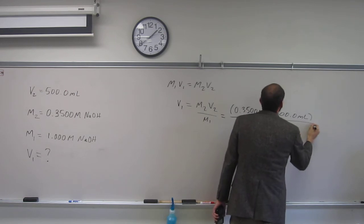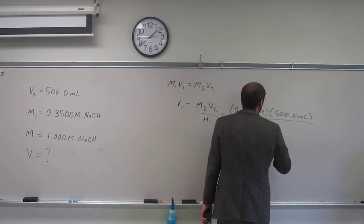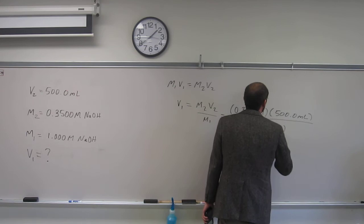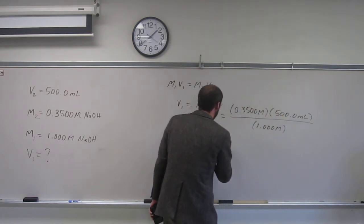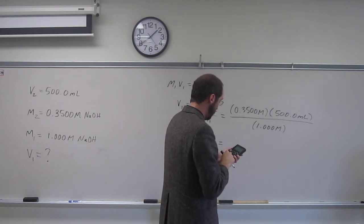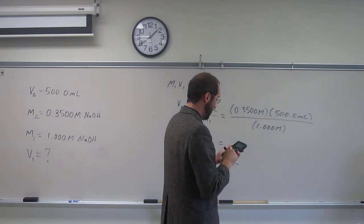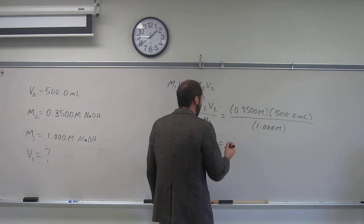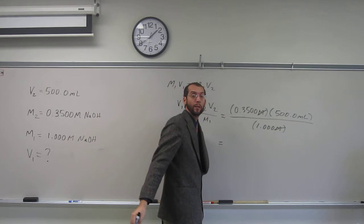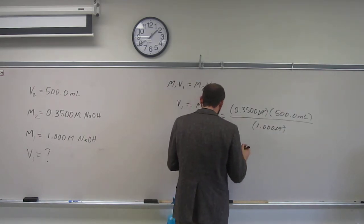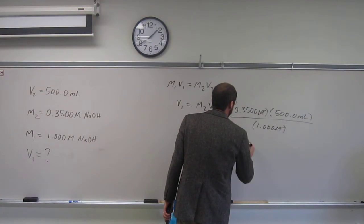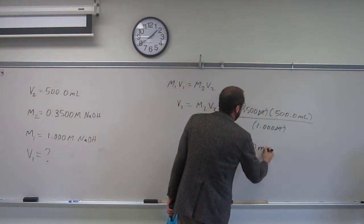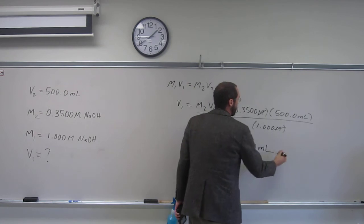divided by 1.0 molar, so four, four, four, so our final answer is going to be four sig figs. So 0.35 times 500, divided by 1, so cancel, cancel, right, so it would give milliliters, so I get 175.0 mils of solution.